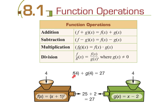When you have a number in the parentheses, you plug that number in for the variable. So if I want f of 4, I put 4 into the function: 4 plus 1 is 5, and 5 squared is 25. For g of 4, I put 4 in: 4 minus 2 is 2, so the output is 2.